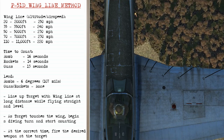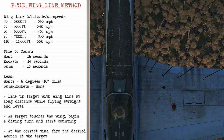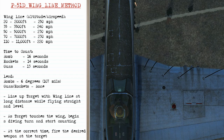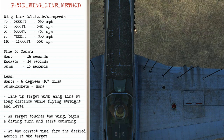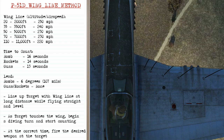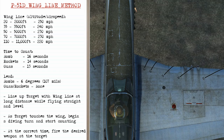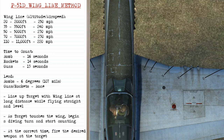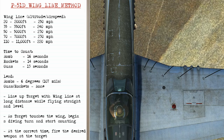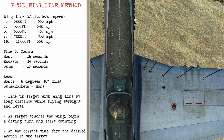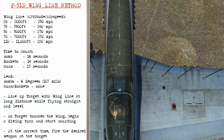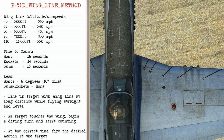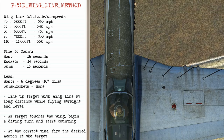For the wingline method on the P-51, you choose your wingline based on what altitude you want to attack at, then pick the appropriate airspeed. The time to count on the approach depends on the weapon: for bombs count 16 seconds, rockets 14 seconds, and guns 13 seconds. Bombs require 6 degrees or 107mm of lead; guns and rockets won't require any lead. Line up the target with a wingline at a long distance while flying straight and level, then as the target touches the wing, begin a diving turn and start your countdown, then fire the desired weapon at the correct time. You can set up bombs and rockets to fire in singles or pairs — it's up to you.